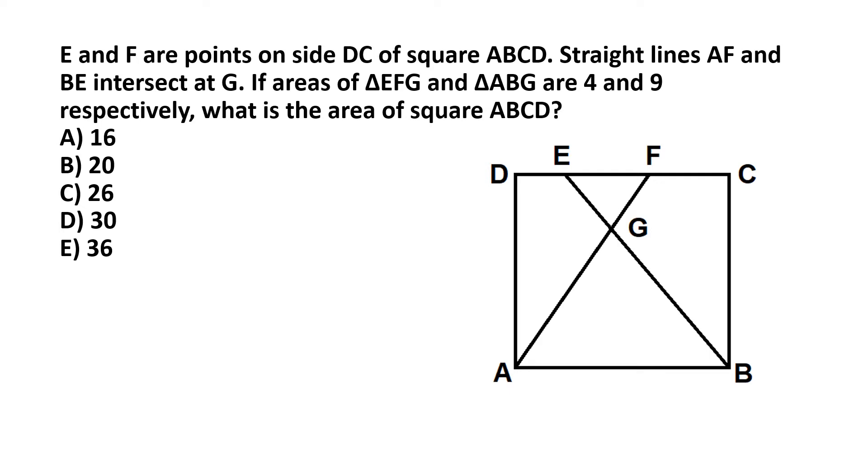And similarly we have the straight line BE intersecting the parallel lines AB and DC, and as a result the alternate angles shown here marked in green should be equal as well. So we have two corresponding angles of triangle ABG and triangle EFG equal. That implies that these two triangles are similar triangles.